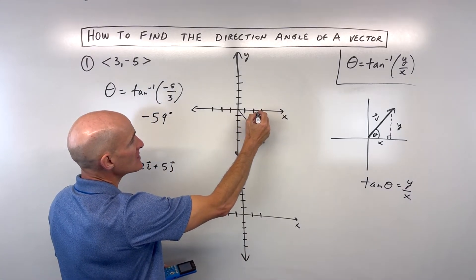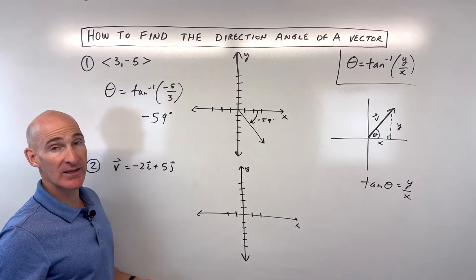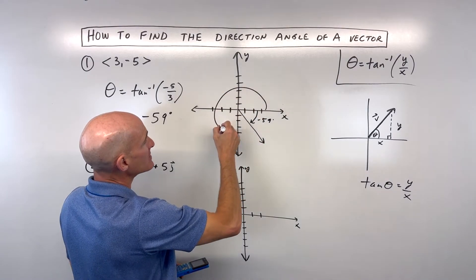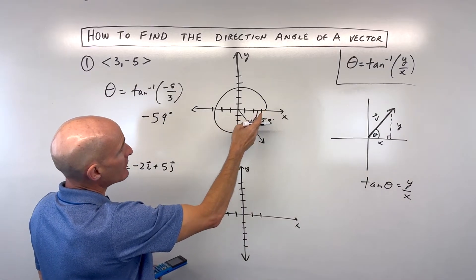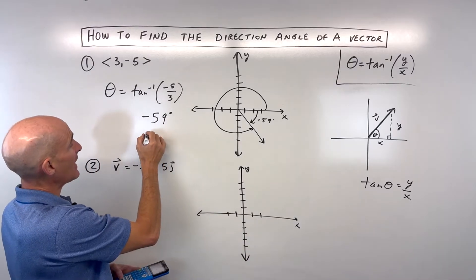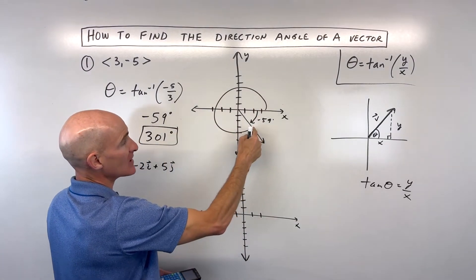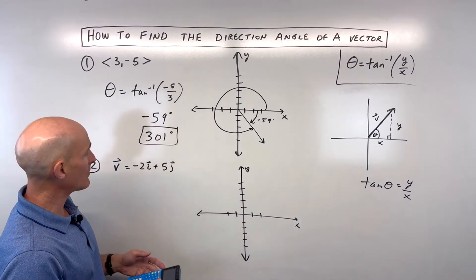Now, negative 59 degrees, that's right here, clockwise. Clockwise is a negative angle. We want the angle that's counterclockwise from the positive x-axis. That's our direction angle. So you can see here, what I'm going to have to do is add 360 degrees, giving us an angle of 301 degrees. So remember, with a positive x-axis measured counterclockwise. Let's look at example number two.